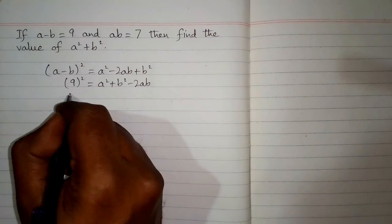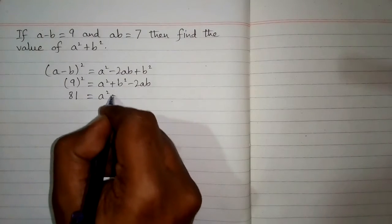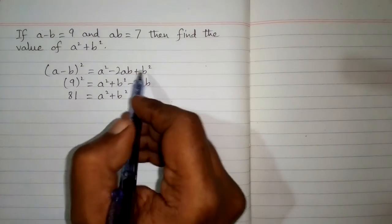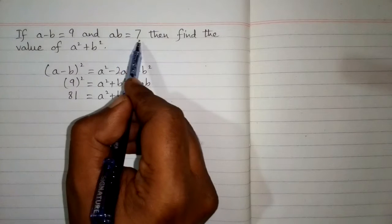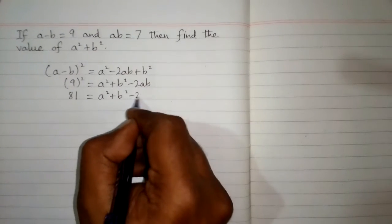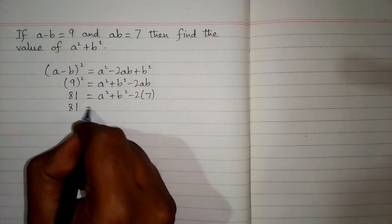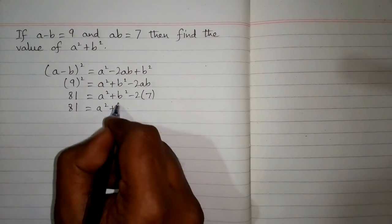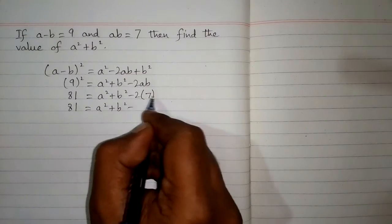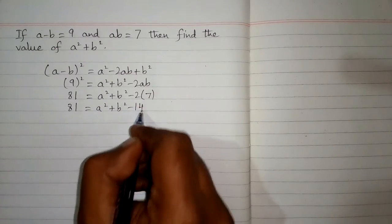Square of 9 is 81. The value of AB is 7, so we put 7 in place of AB. Now we have 81 is equal to A square plus B square minus 2 times 7, which is minus 14.